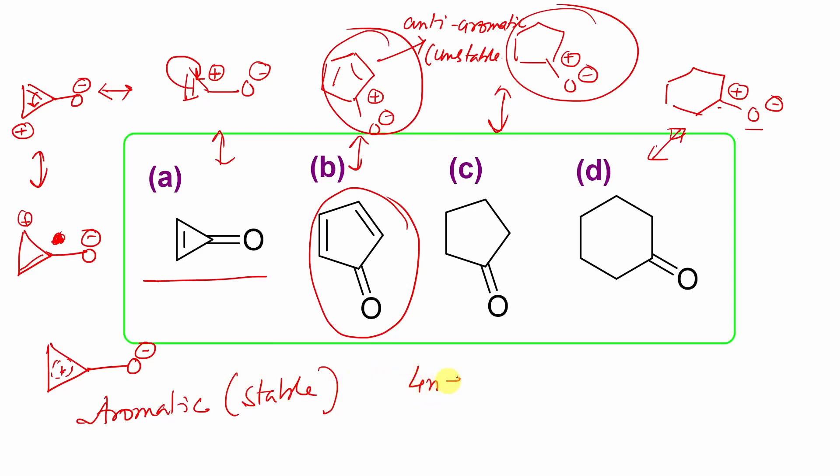Here, in case of Huckel rule or 4n plus 2 number of pi electron rule, if you want to check, then here n value is actually 0. Then, if n value is 0, the 2 remains. So, here, 2 pi electrons are there. And because of that, this ring is aromatic.